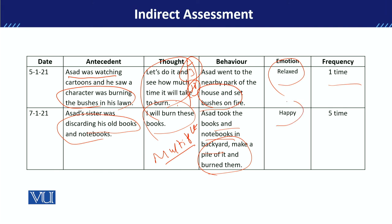When he burned them, his emotions were of happiness — he felt very happy watching them burn. He did this five times. This means either he burned the notebooks in five separate sessions, or he burned five different sets of old books and notebooks on five different occasions. The person reporting the frequency needs to clearly state this distinction.